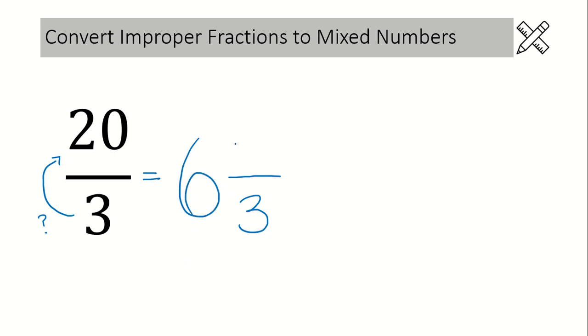And then the last thing we need to figure out is what the numerator is going to be. To figure out your numerator, come over here to your mixed number and take your denominator 3 and multiply it by your whole number. 3 times 6 is 18. And then ask yourself what do I add to 18 to make 20? That would be 2. So 20 over 3 is equal to 6 and 2 thirds.